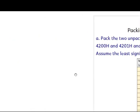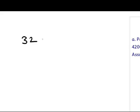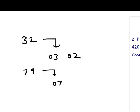First, let us see what packing and unpacking means. For example, consider the BCD number 32. This is a packed BCD number. If we unpack this number, we get 03 and 02. Similarly, if we have 79 as a BCD number and unpack it, we get 07 and 09.